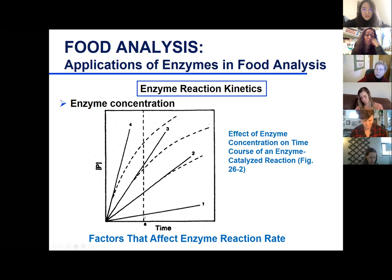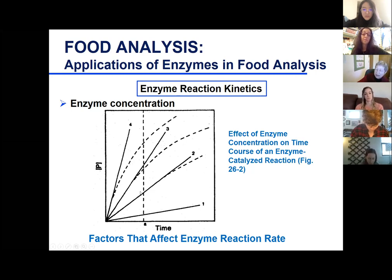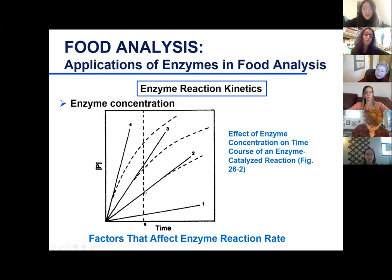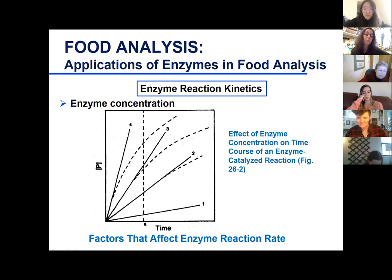Number two is actually the best answer if we want to stop the reaction at time A. With concentration one, there's so little product that it's difficult to measure accurately. Number two shows the tangent line identical to the measured value at time A. With number three, we're already starting to diverge from the linear portion at time A. Number four is way off. We have to use the right enzyme concentration to stay in the linear portion of the curve.